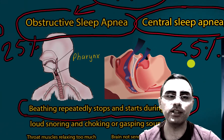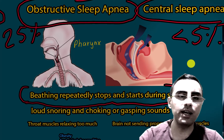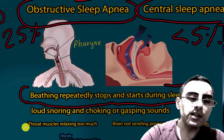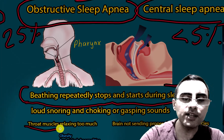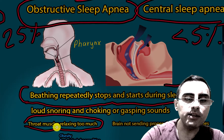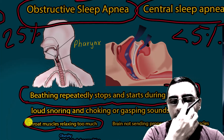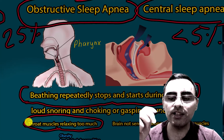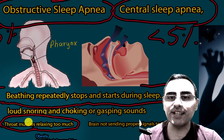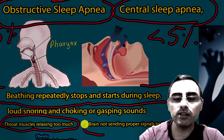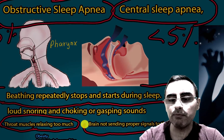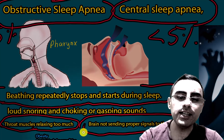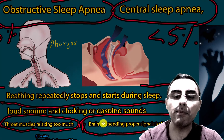Obstructive sleep apnea looks very much like snoring — the throat muscles collapse and relax too much, stopping airflow, and breathing repeatedly stops and starts. In central sleep apnea, the brain is not sending proper signals to the muscles to breathe. So in central sleep apnea, the brain signals are interrupted.